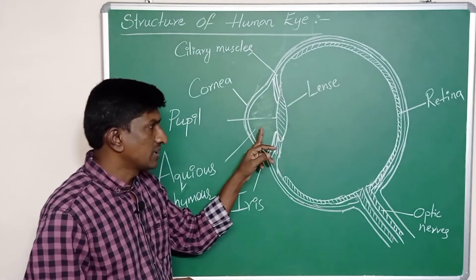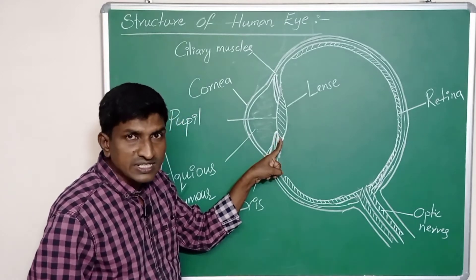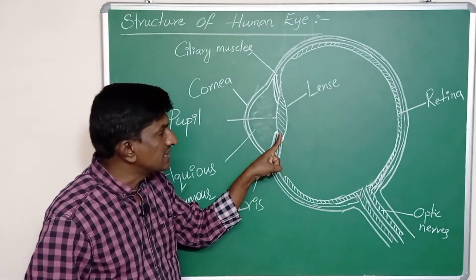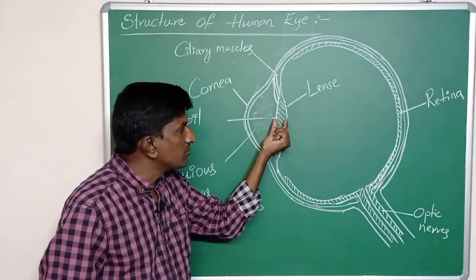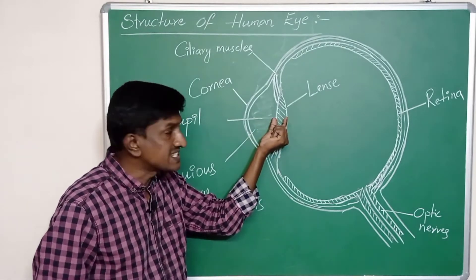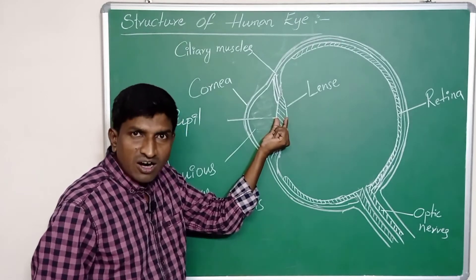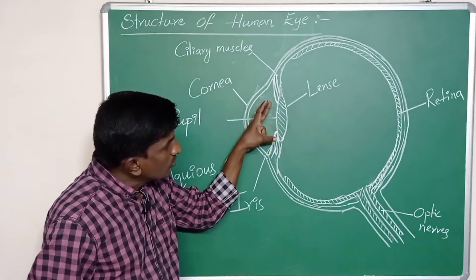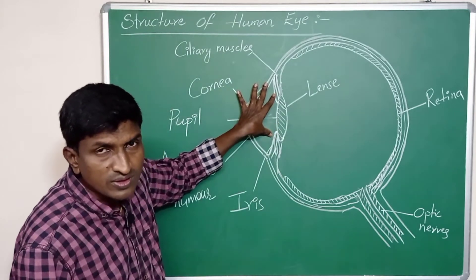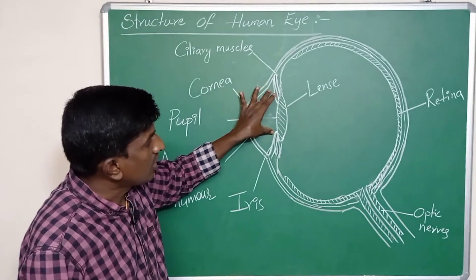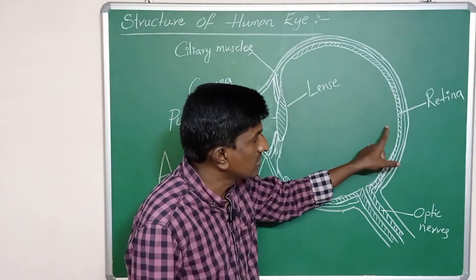After the pupil, a convex lens is present — that is generally called the eye lens. This crystalline lens is hard in the middle part; as we move toward the edges it becomes soft.